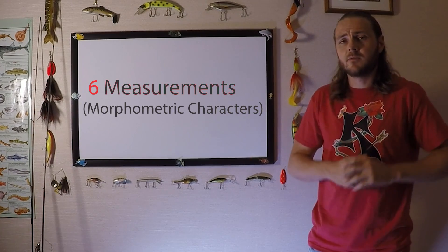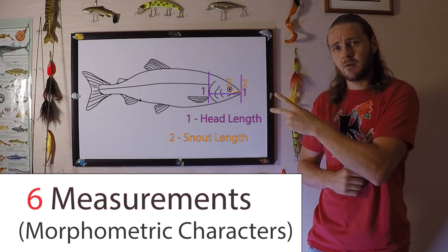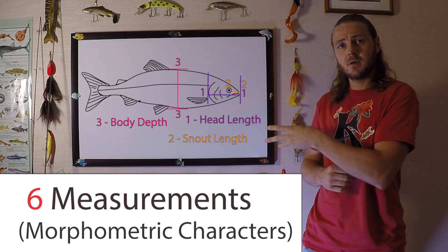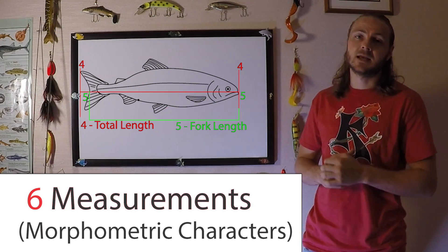The six measurements that we'll be going over are head length, snout length, body depth, total length, fork length, and standard length.